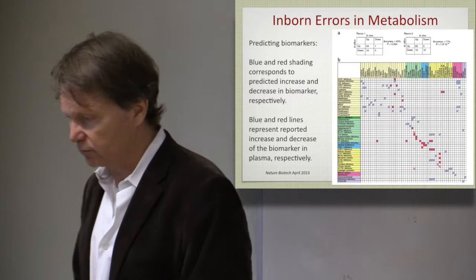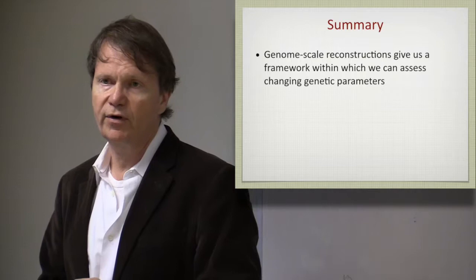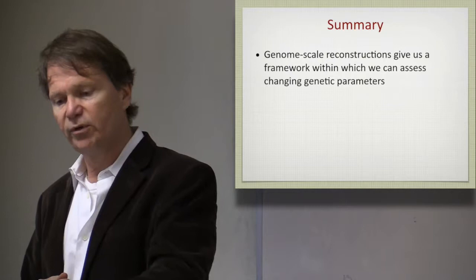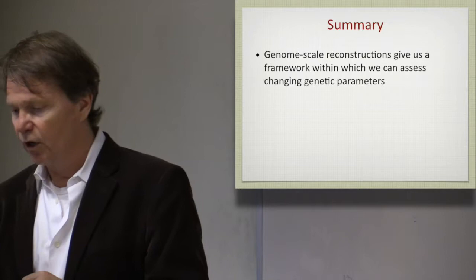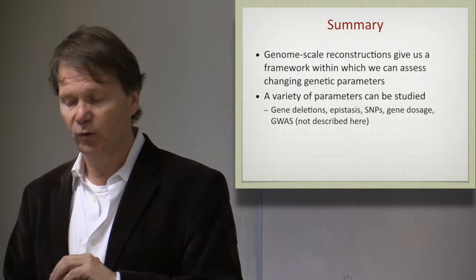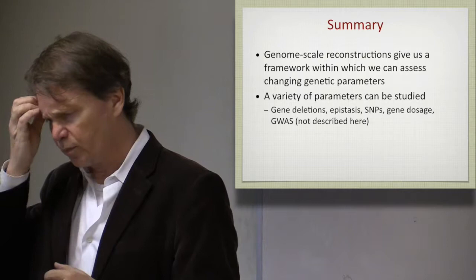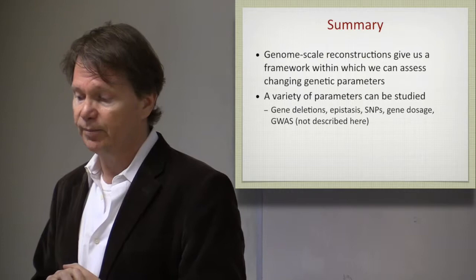All right, so let's summarize. So genome scale reconstructions give us a framework to assess genetic parameters. And this is done because every reaction has a genetic basis in the model. And therefore, you can trace that relationship. Any alteration in a genetic property is directly reflected in the activity of a link in your network. So a variety of parameters can be studied. So gene deletions, like we talked about, those are relatively easy to do. Epistasis or, you know, like synthetic lethal interactions between genes can be studied. We can map single nucleotide polymorphisms, as we showed, and try to correlate those. Gene dosage.